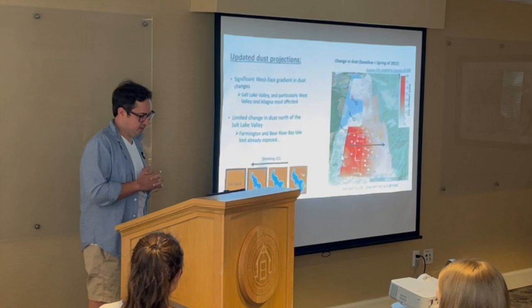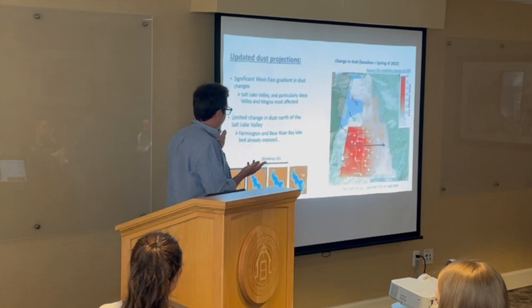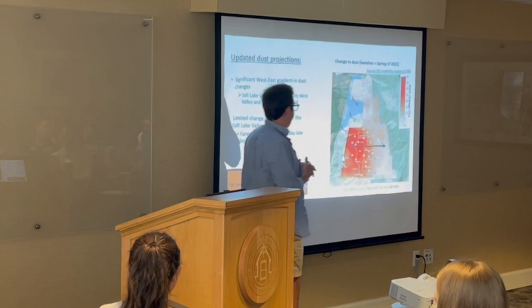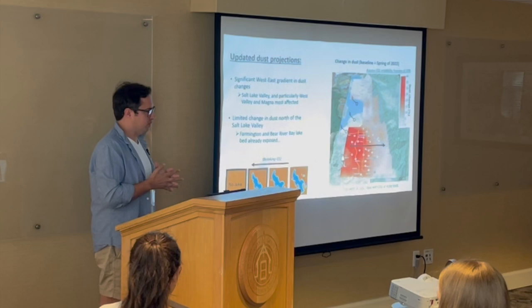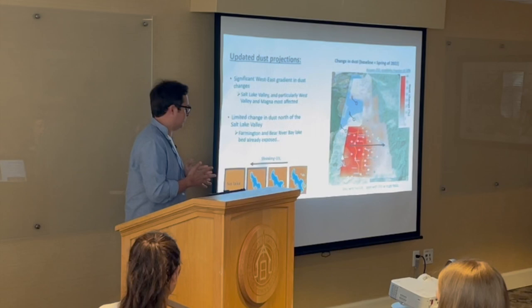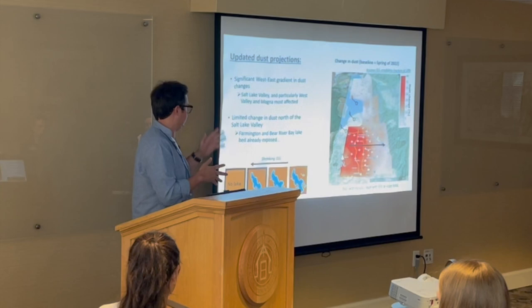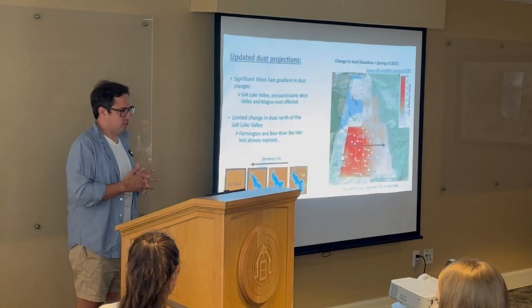Another interesting result: I expected Davis and Weber County to be more impacted by a shrinking Great Salt Lake, but that was not actually the case. I concluded that this isn't entirely surprising because Farmington Bay and a good part of Bear River Bay are already exposed, so you won't see a huge change in dust for those areas. This is based on spring 2022 data only — a relatively small sample size — but it gives a sense of how dust might change if the lake keeps shrinking.